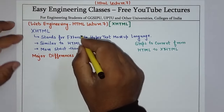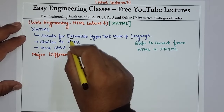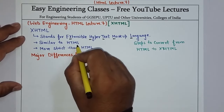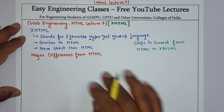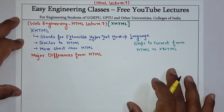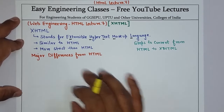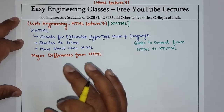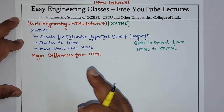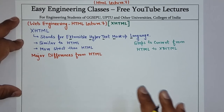XHTML stands for extensible hypertext markup language. It is similar to HTML but the difference is it is very strict. In HTML, if we have not closed some tags, you can still run the page, though the browser may show some warnings. But in an XHTML page, you have to follow some rules. It is required to close all HTML tags, so XHTML is used where we have to properly write the syntax of the web page.